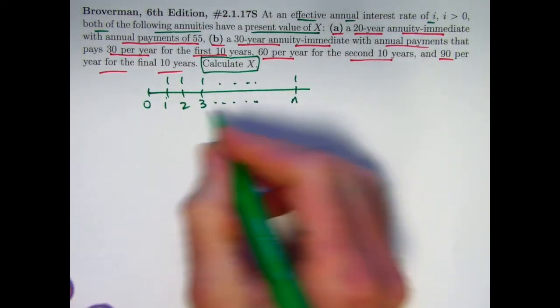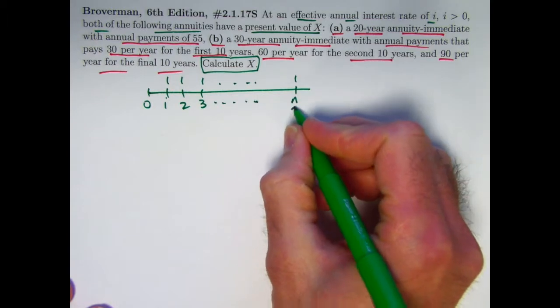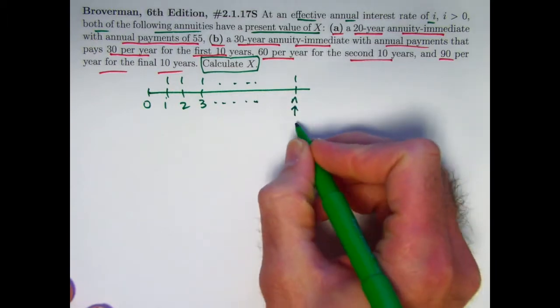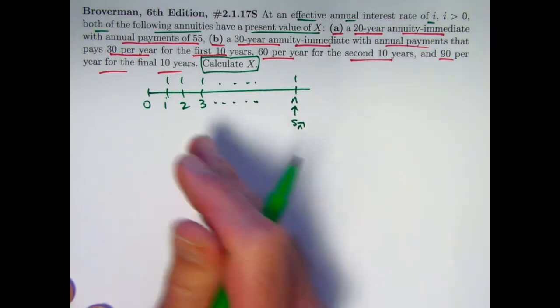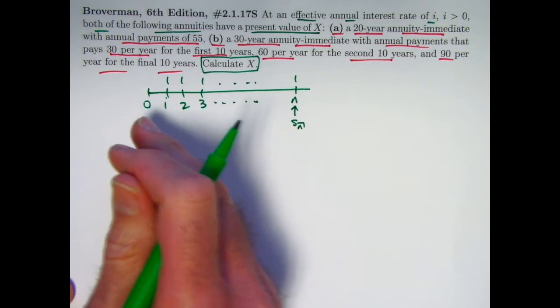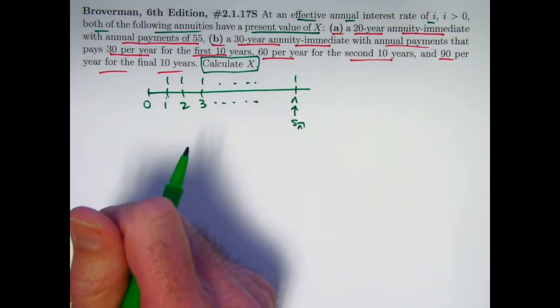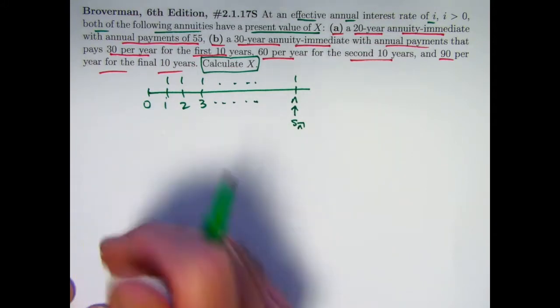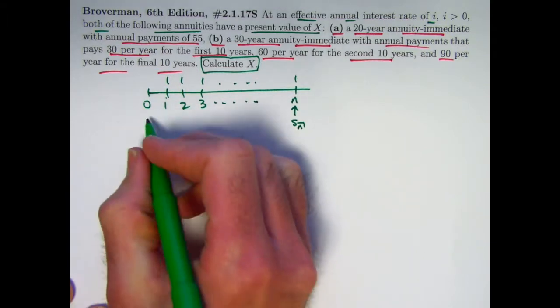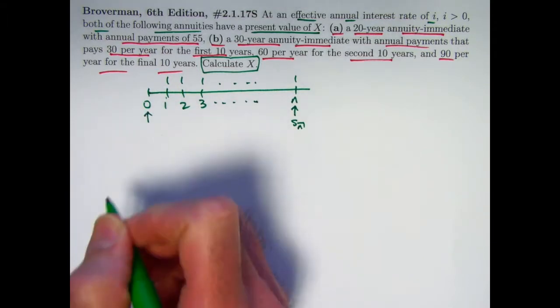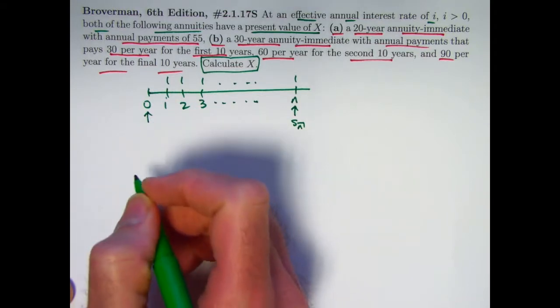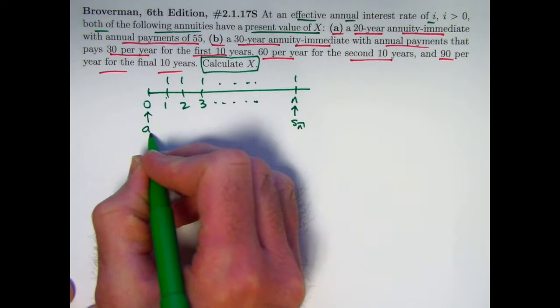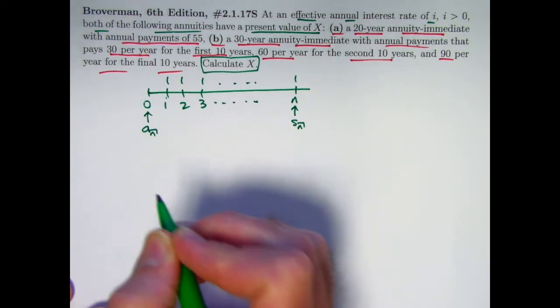The future value of this at time N immediately after that last payment is S_N. You think of that as the future value for this annuity immediate. Since I'm thinking of starting at time zero and having these payments be at the end of each year, for the present value I want to discount these back in time to time zero. The present value of such an annuity immediate is going to be one year preceding the very first payment. And the symbol for it is A_N. Alright, we have seen the formula for S_N.